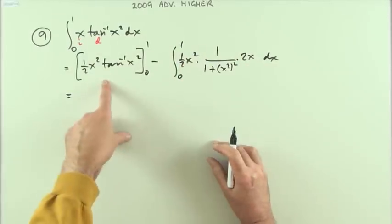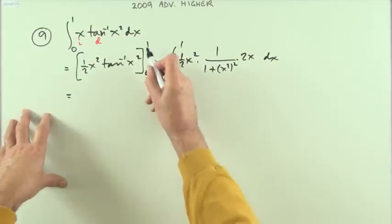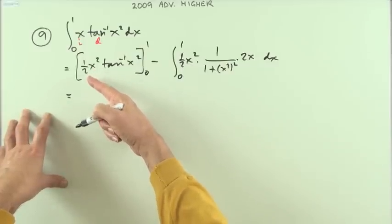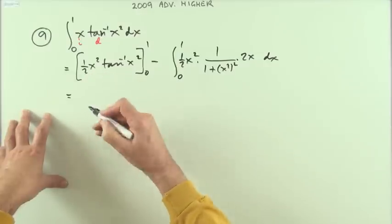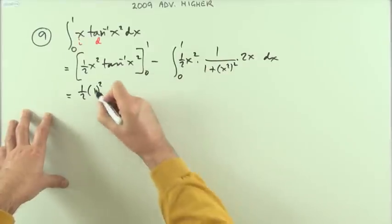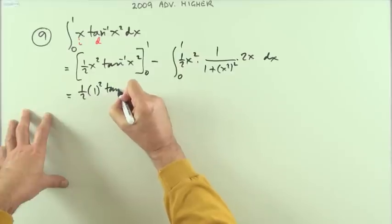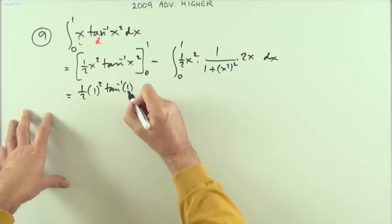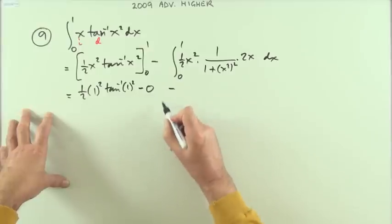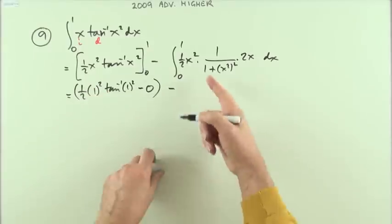So what I've got in the next line, I'll start to evaluate this. It says work it out at one. Well when you work it out at one you're going to have a half of one squared, I'll just put the substitutions in, a half of one squared times inverse tan of one squared.